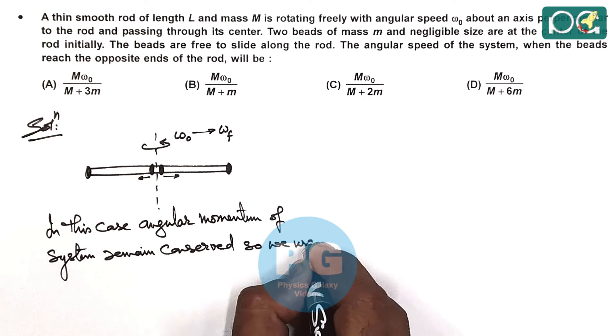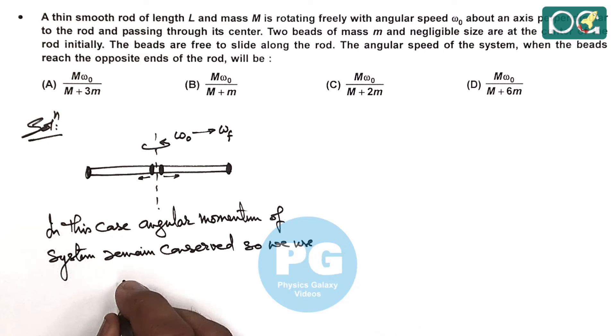So we use in this case the initial I1 omega naught is equals to I2 omega final, where I1 is the initial moment of inertia and I2 is the final moment of inertia.